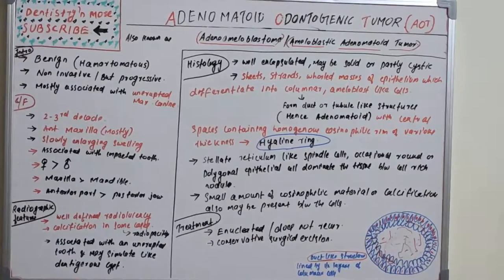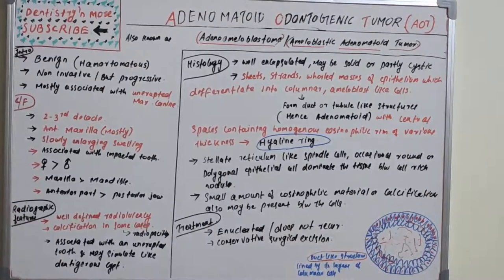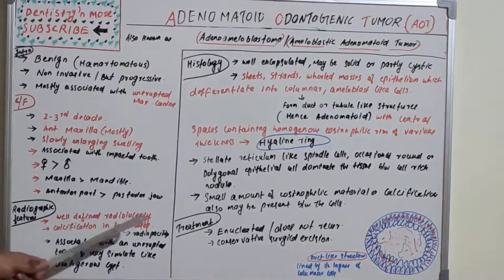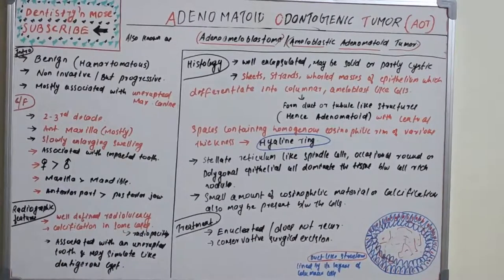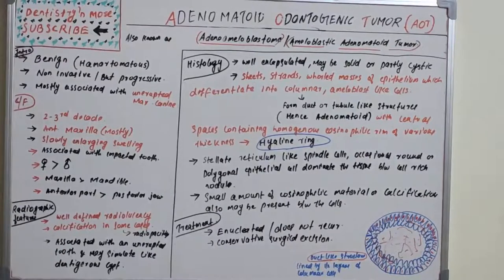Regarding radiographic features, it is a radiolucent lesion — a well-defined radiolucent lesion. In some cases it gets calcified in a few areas, which appear as radio-opacities on the radiograph. It is associated with an unerupted tooth, and it sometimes looks like a dentigerous cyst since both are associated with an unerupted tooth, leading to misdiagnosis.